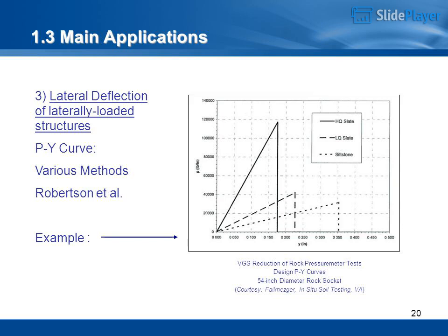Lateral deflection of laterally loaded structures: PY curve, various methods including Robertson et al. Example: VGS reduction of rock pressuremeter tests for design PY curves — 54-inch diameter rock socket. Courtesy of FALMASJAR In-Situ Soil Testing, Virginia.